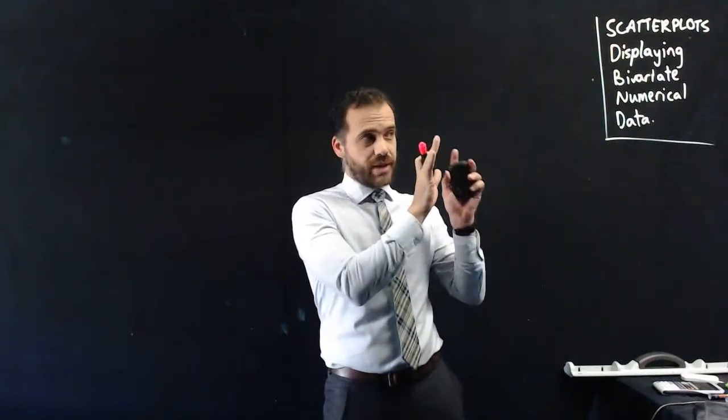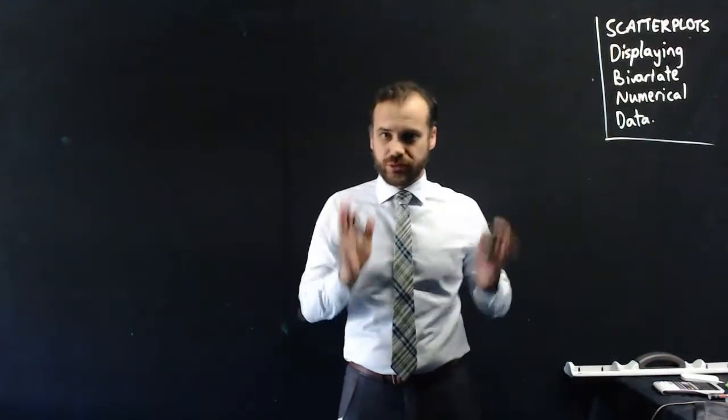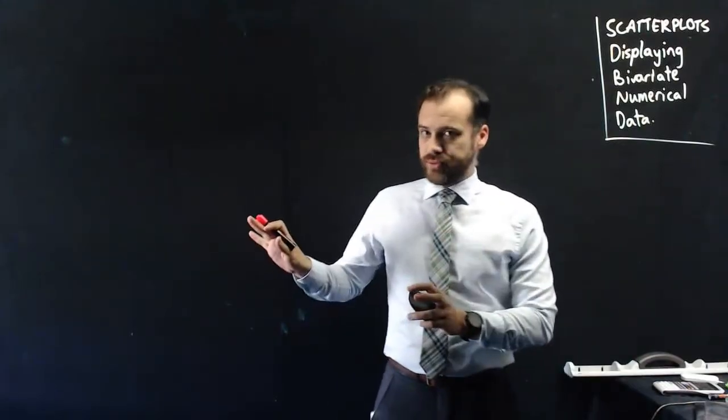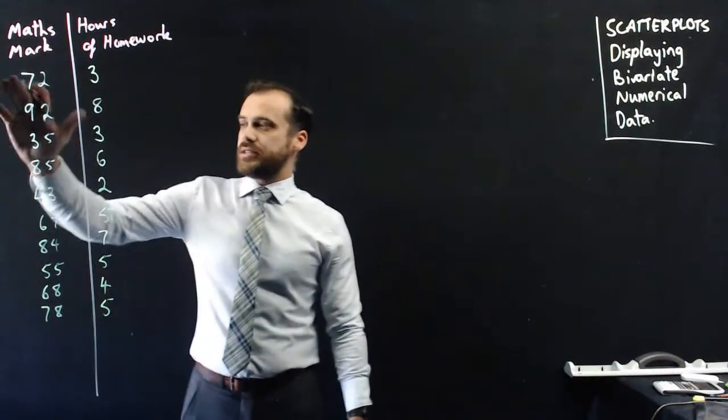So we're looking at scatter plots here to display bivariate numerical data. You've done this before, so we're going to be able to jump through it really quickly. Example. So here's our data set. We've got 10 students here.